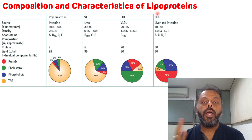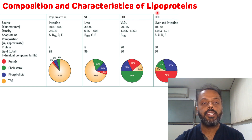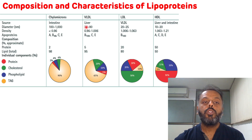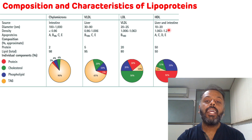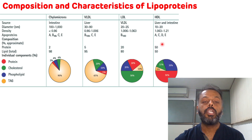From chylomicron to HDL, the size decreases. Chylomicron is the biggest in size, VLDL is large, LDL is small, and HDL is the smallest. As the size decreases, density increases — chylomicron has low density while HDL has high density. And as density increases, the protein content also increases: chylomicron has low protein content while HDL has a high protein content of 50%.